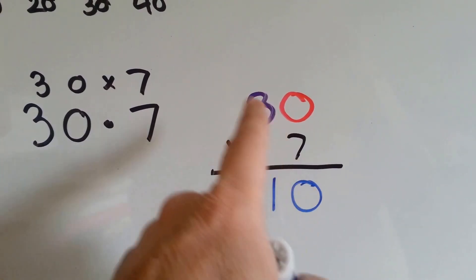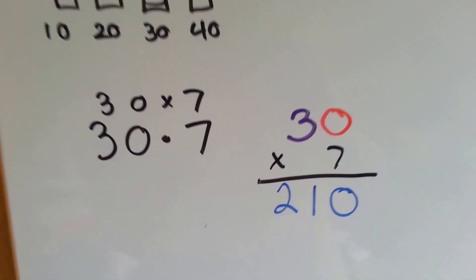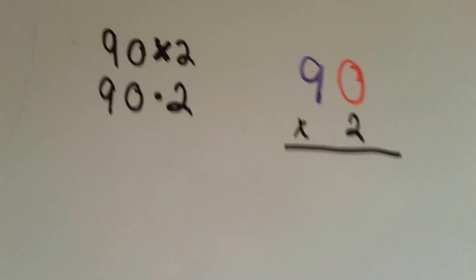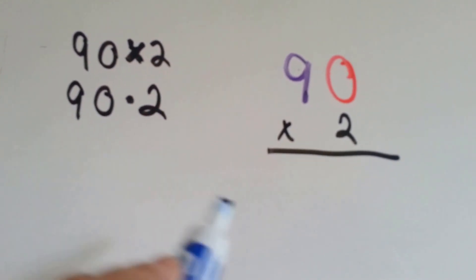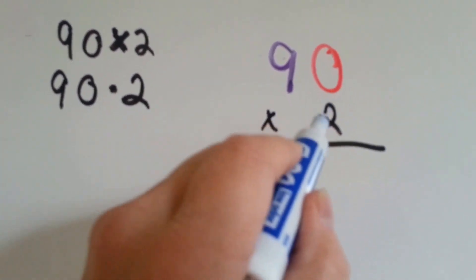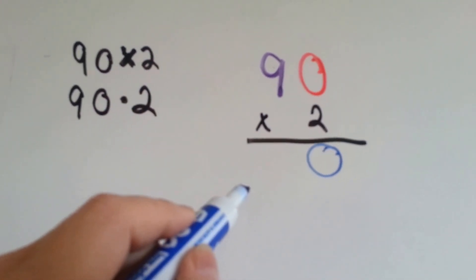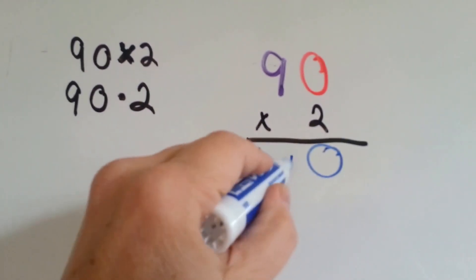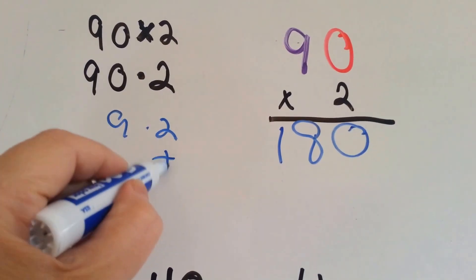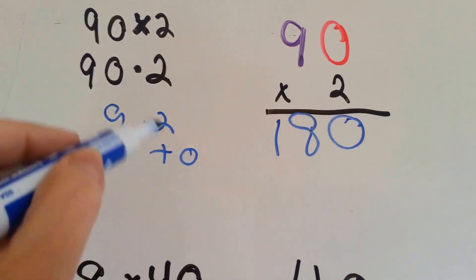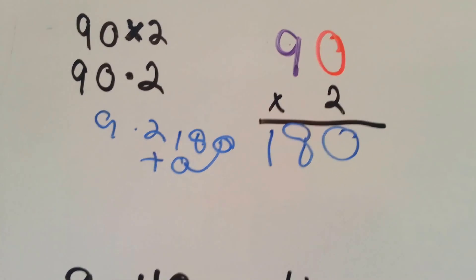See how that happened? Even though we're multiplying in the tens place, it got so big it pushed us into the hundreds. That's OK. Let's try this one. 90 times 2. 2 times 0 is 0, and 2 times 9 is 18. It's the same thing as saying 9 times 2, and then you add the 0. 9 times 2 is 18, and then we put the 0 at the end.